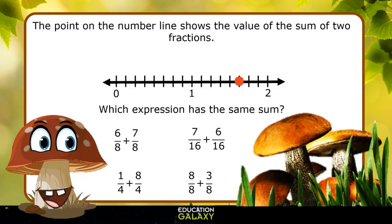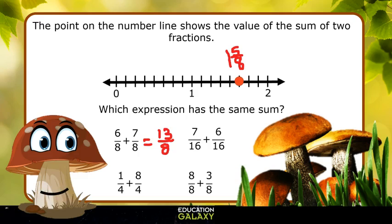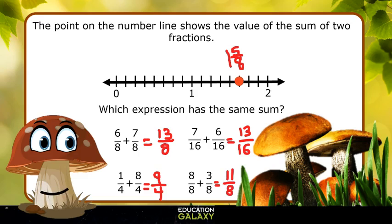This one says, the point on the number line shows the value of the sum of two fractions — which expression has the same sum? Since every 8 marks on the number line is 1 whole, each mark represents 1 eighth. That would make our point 1 and 5 eighths. So we're looking for an expression with a sum of 1 and 5 eighths. 6 eighths plus 7 eighths equals 13 eighths. 7 sixteenths plus 6 sixteenths equals 13 sixteenths. 1 fourth plus 8 fourths equals 9 fourths. And 8 eighths plus 3 eighths equals 11 eighths. Wait a minute — none of them gave me 1 and 5 eighths; they gave me improper fractions. Let's look at 1 and 5 eighths again. The point is on the 13th mark past 0, that's the 13th eighth — so that would give us 13 eighths. That means 6 eighths plus 7 eighths is correct.